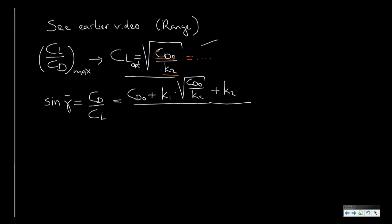plus k2 times CL squared, and if I take the square of this whole relation, I get CD0 divided by k2, and of course I have to divide the whole equation by CL, which is the square root of CD0 divided by k2, and if I solve that,